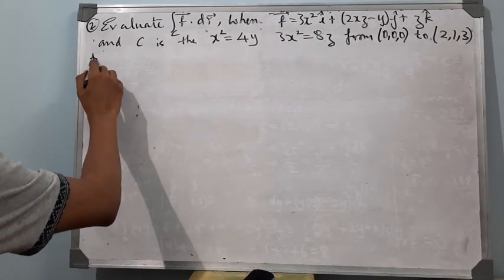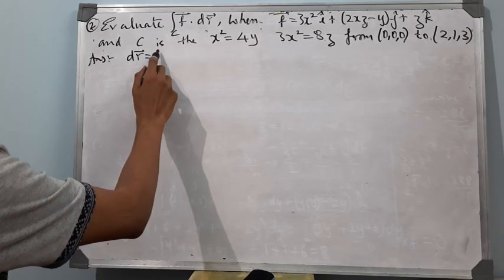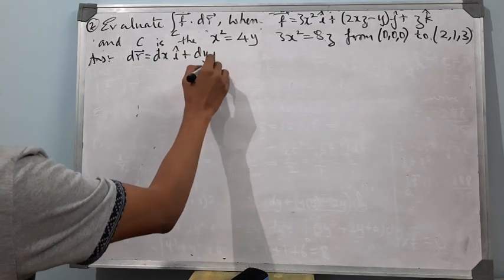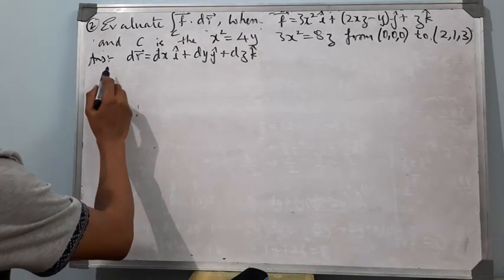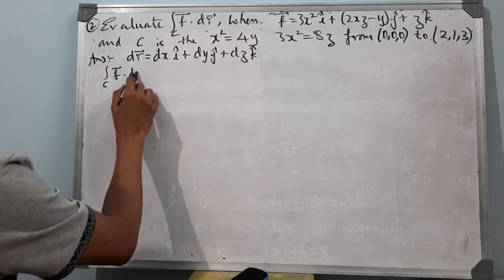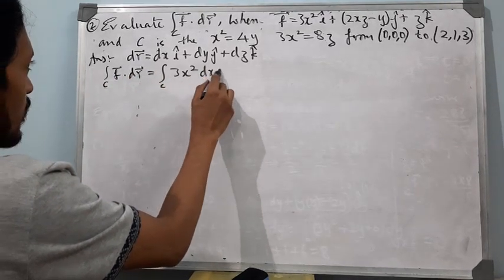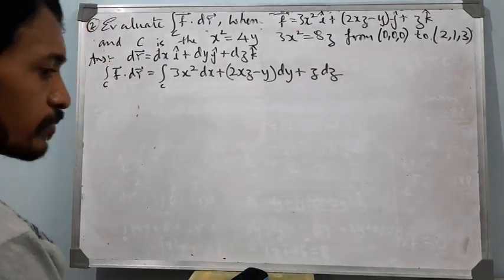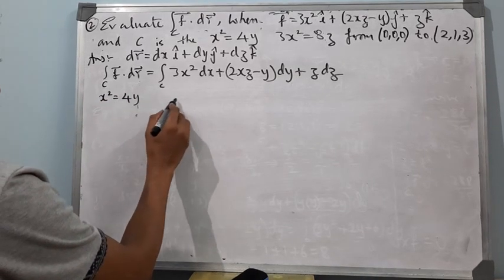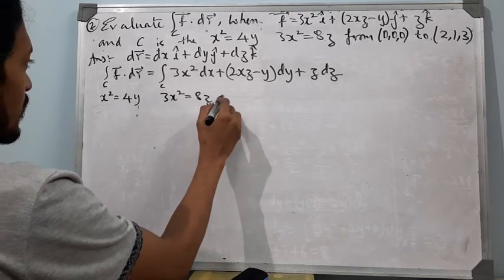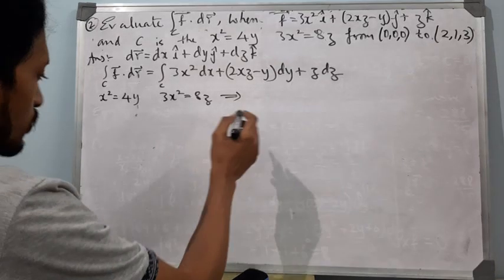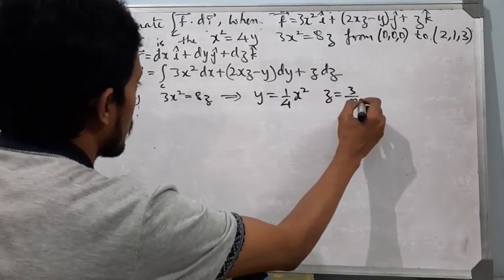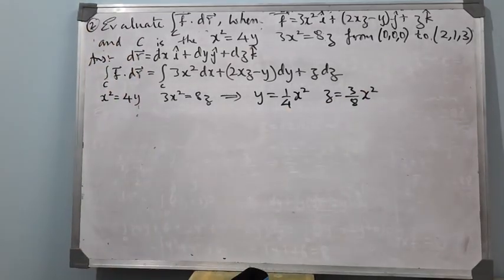Here again dr = dx î + dy ĵ + dz k̂. The integral ∫C f·dr = ∫C 3x² dx + (2xz−y) dy + z dz. The curve is given by x²=4y and 3x²=8z. We can write expressions for y and z in terms of x: y = x²/4 and z = 3x²/8. This means we can write the entire integral in terms of x.